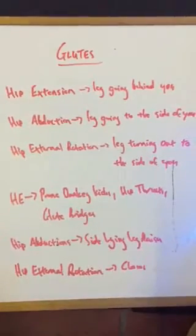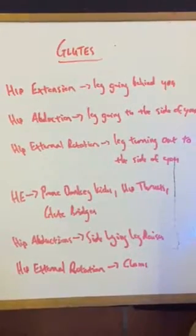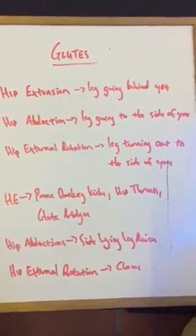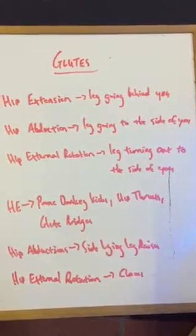So the main actions and the movements of the glutes is hip extension which is where the leg goes behind you as in running, hip abduction where the leg goes to the side of you with the foot facing straight ahead of you.